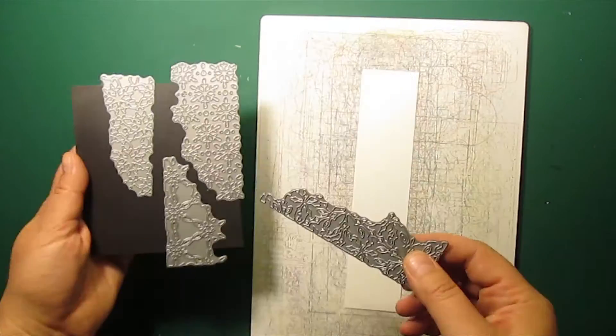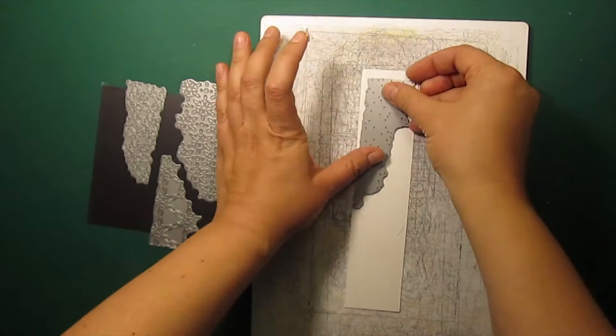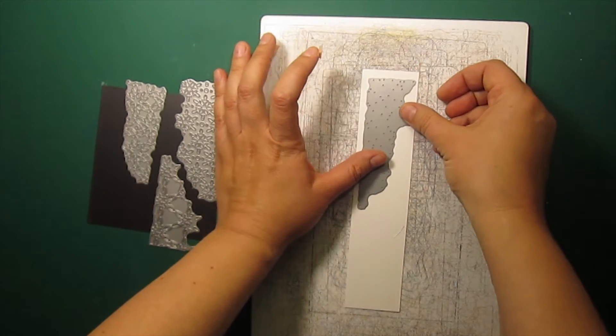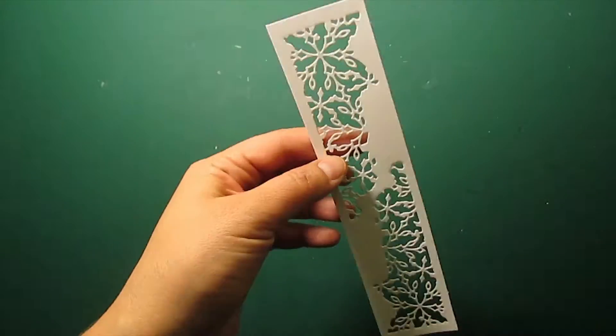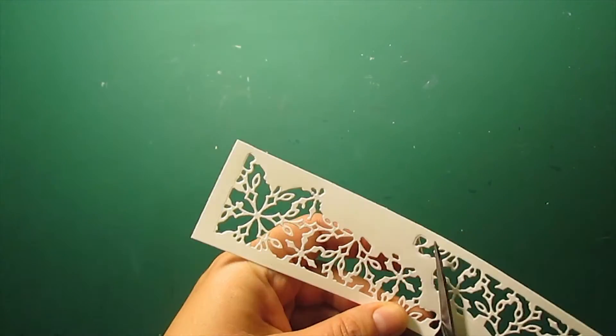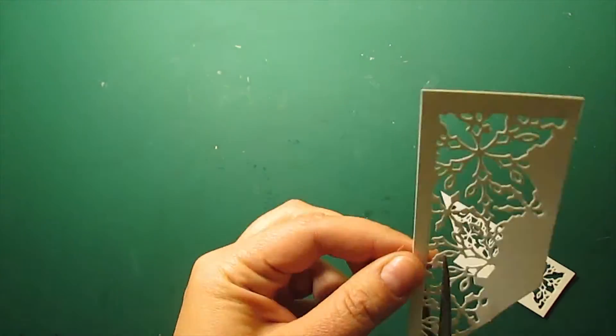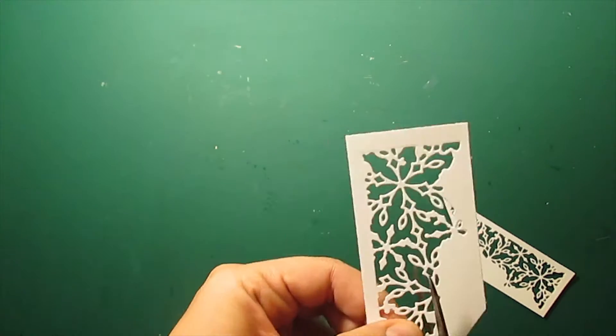Now I'm going to die cut a corner from the distressed snow drift collage. I'm using a piece of scrap cardstock for this. Then I'll be cutting it out with the scissors.